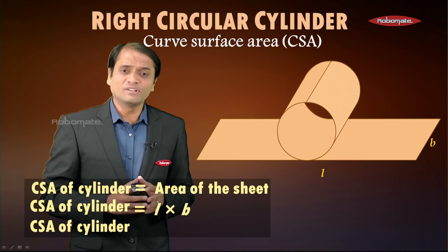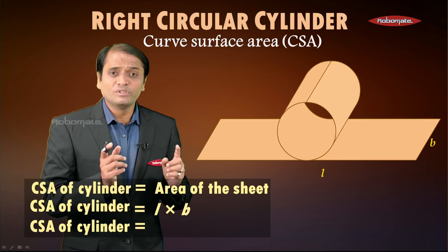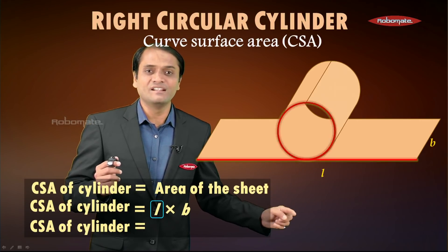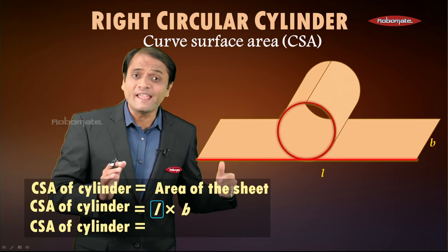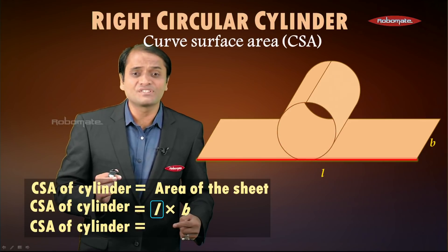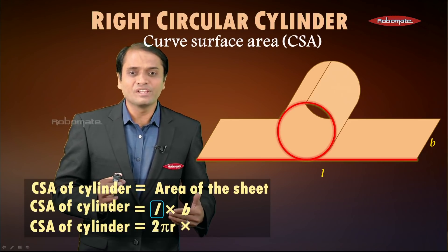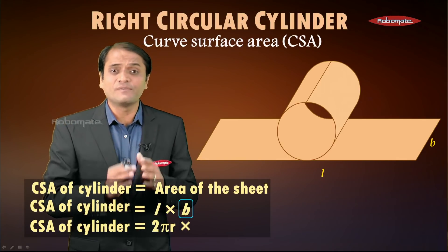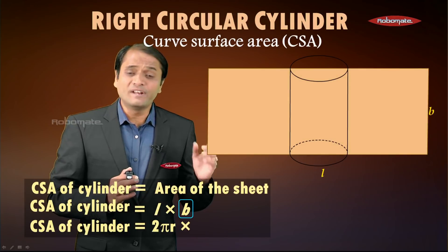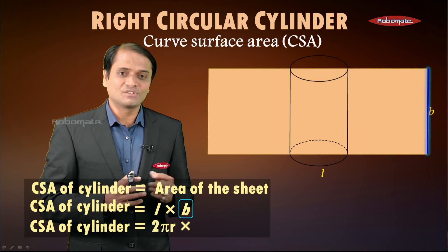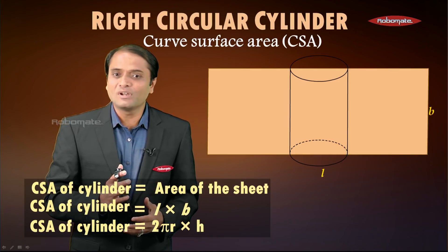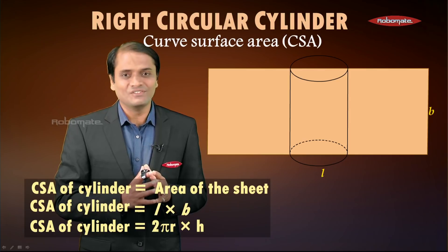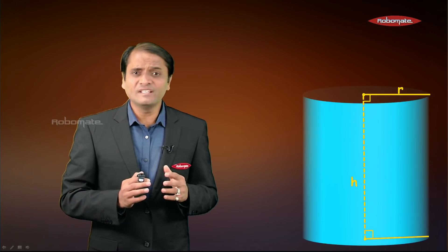When the sheet is rolled, the length l becomes the circumference of the cylinder, which is 2πr. The breadth b becomes the height h of the cylinder. So the final formula for the curved surface area of a cylinder is 2πr × h, that is 2πrh.